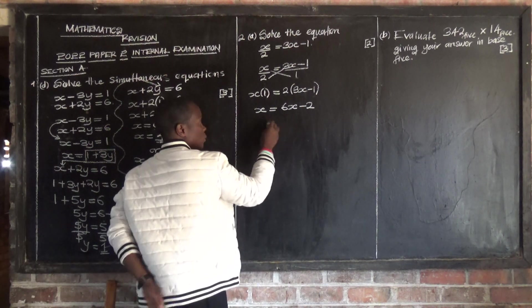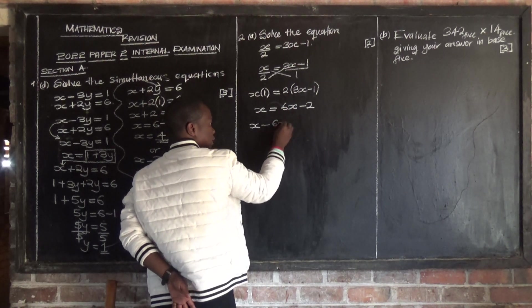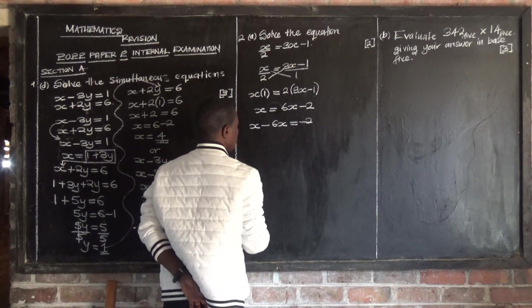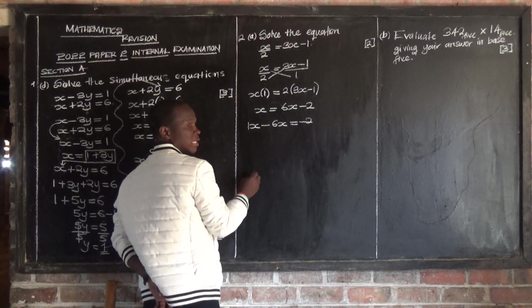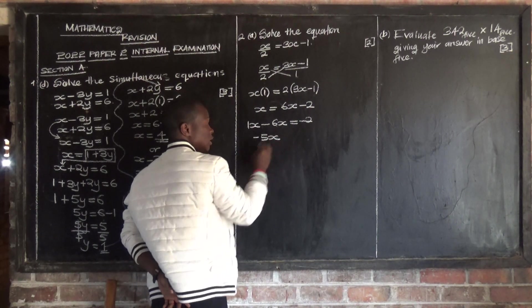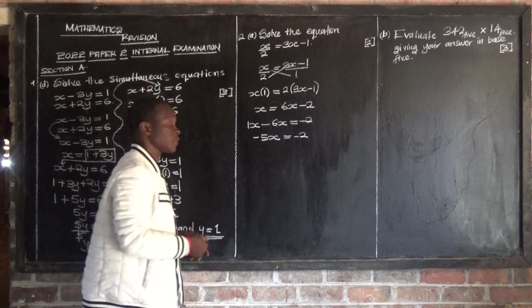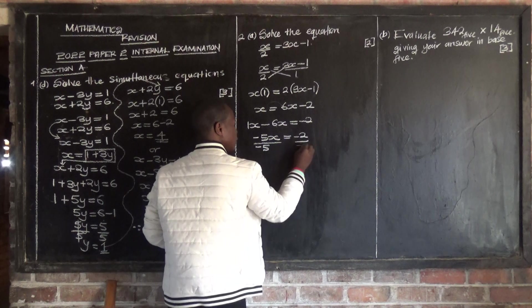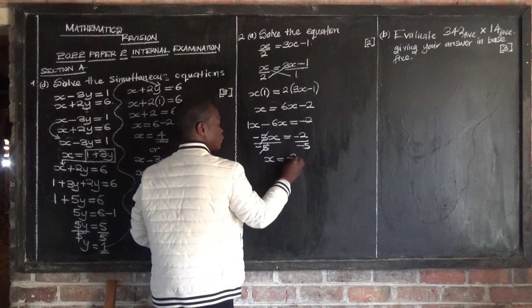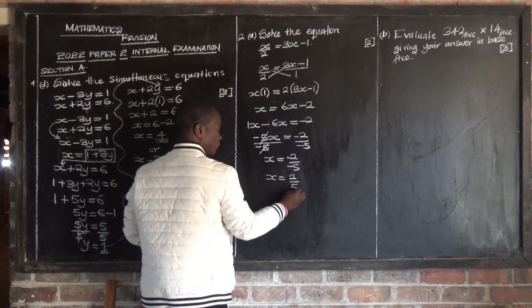So x minus 6x — since x is positive and we transpose it, it becomes negative 6x — is equal to negative 2. So 1 minus 6 gives negative 5x, is equal to negative 2. For us to remain with x, we divide both sides by negative 5. So x is equal to negative 2 over negative 5, and negative over negative is positive, giving us 2 over 5 as our answer.